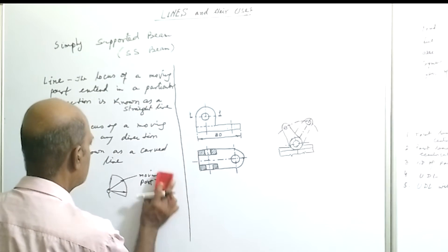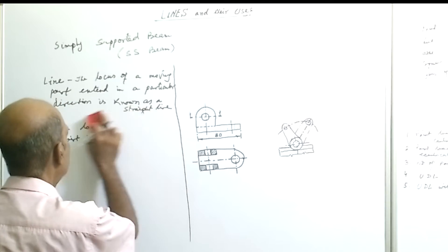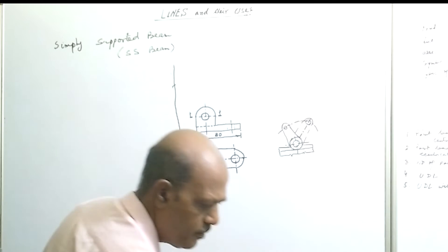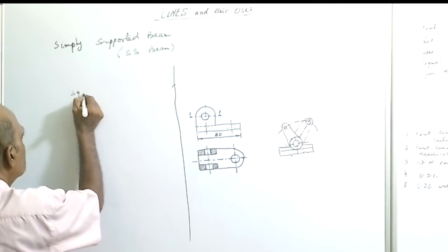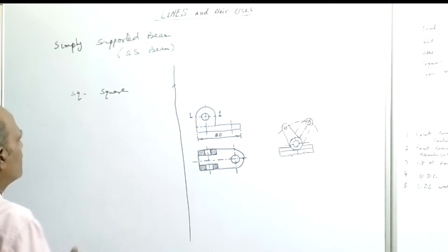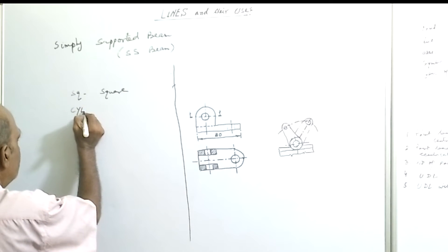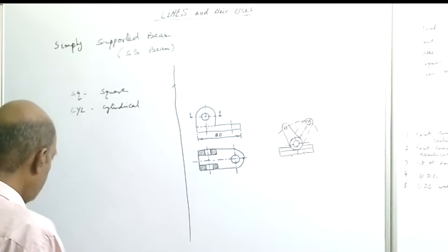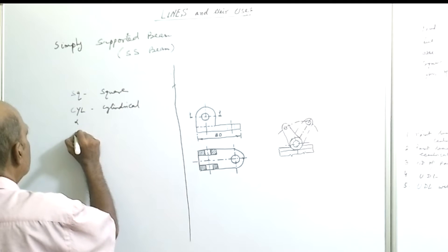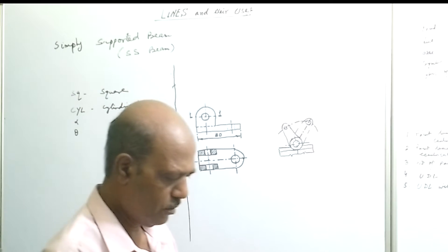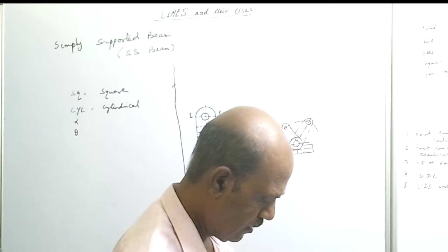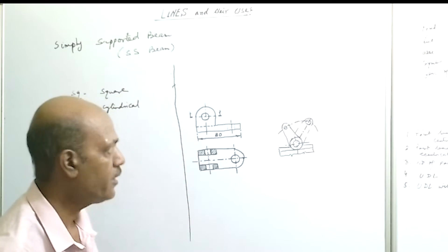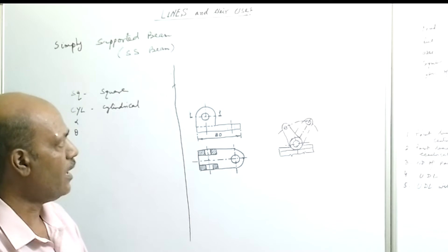Various symbols are used in drawing. For example, a square symbol, or 'CYL' for cylindrical, or angles defined by alpha or theta. There are tables of various symbols, which we will see in another lecture. So drawings are made by using points, lines, arcs, and symbols.